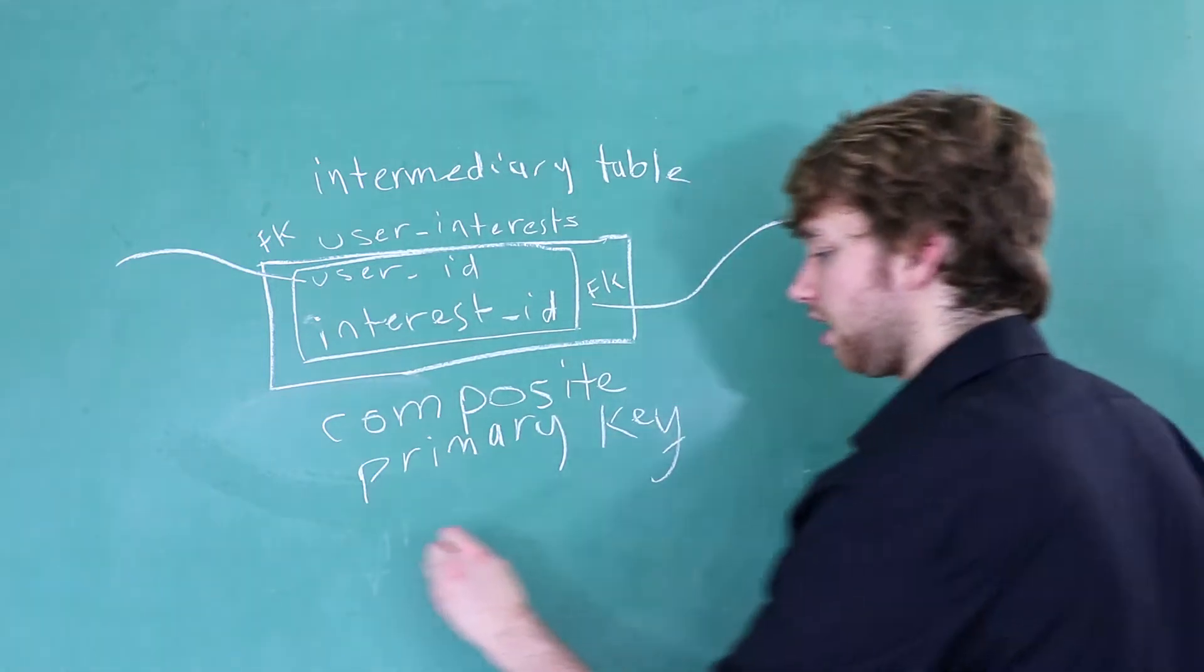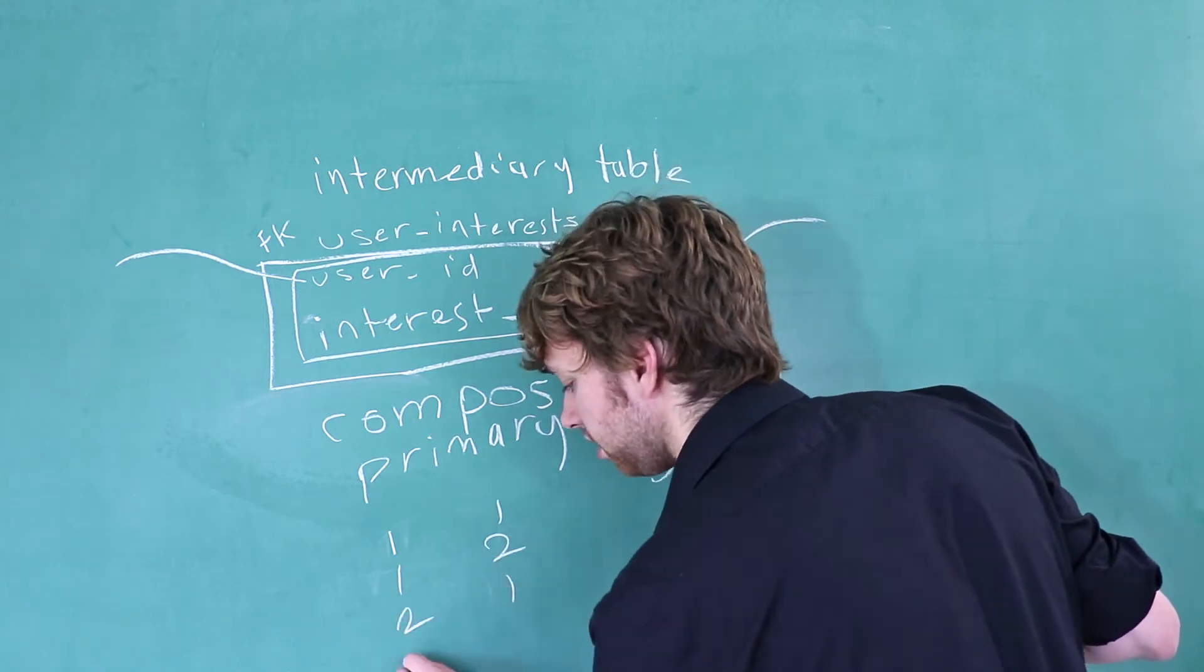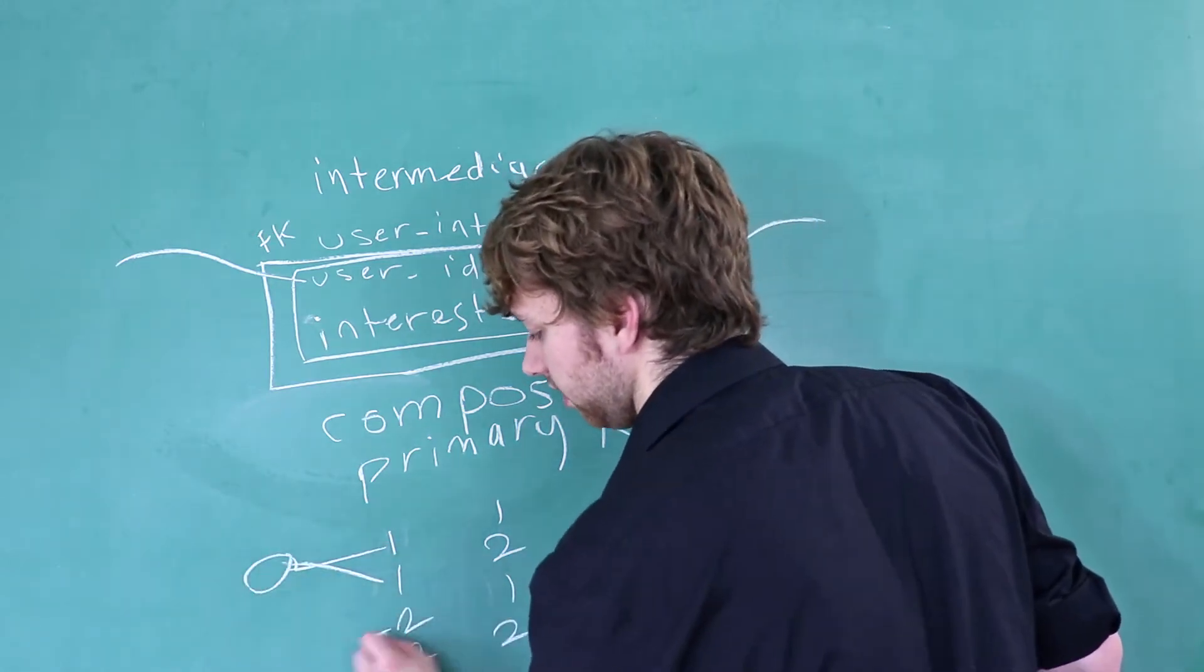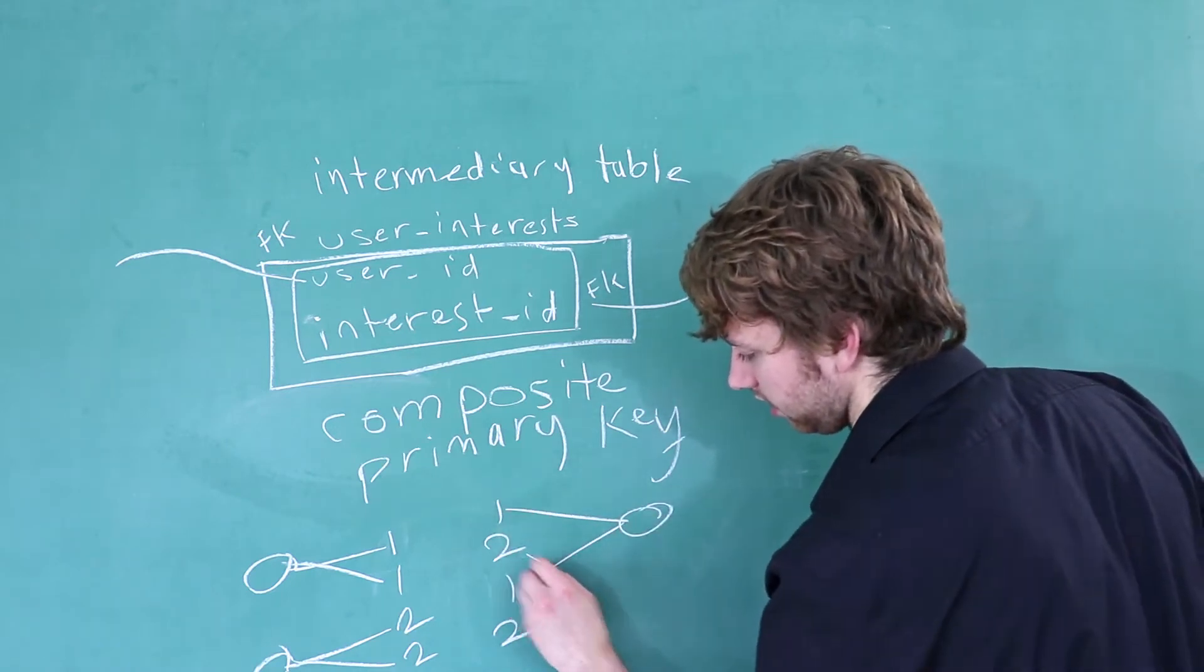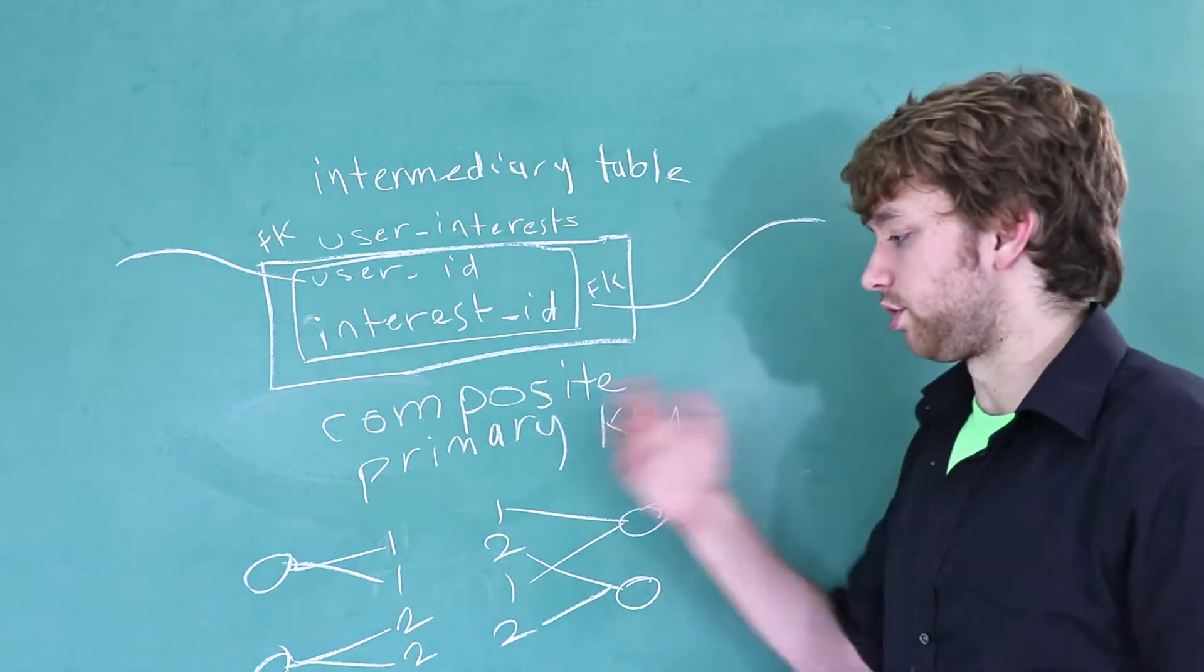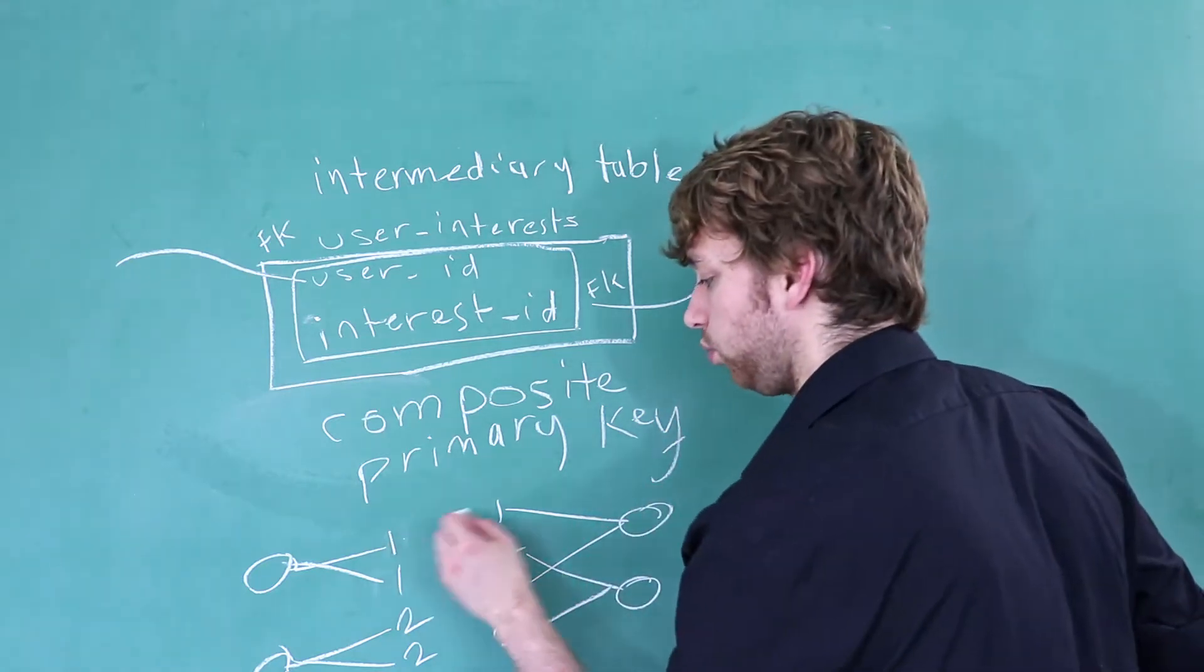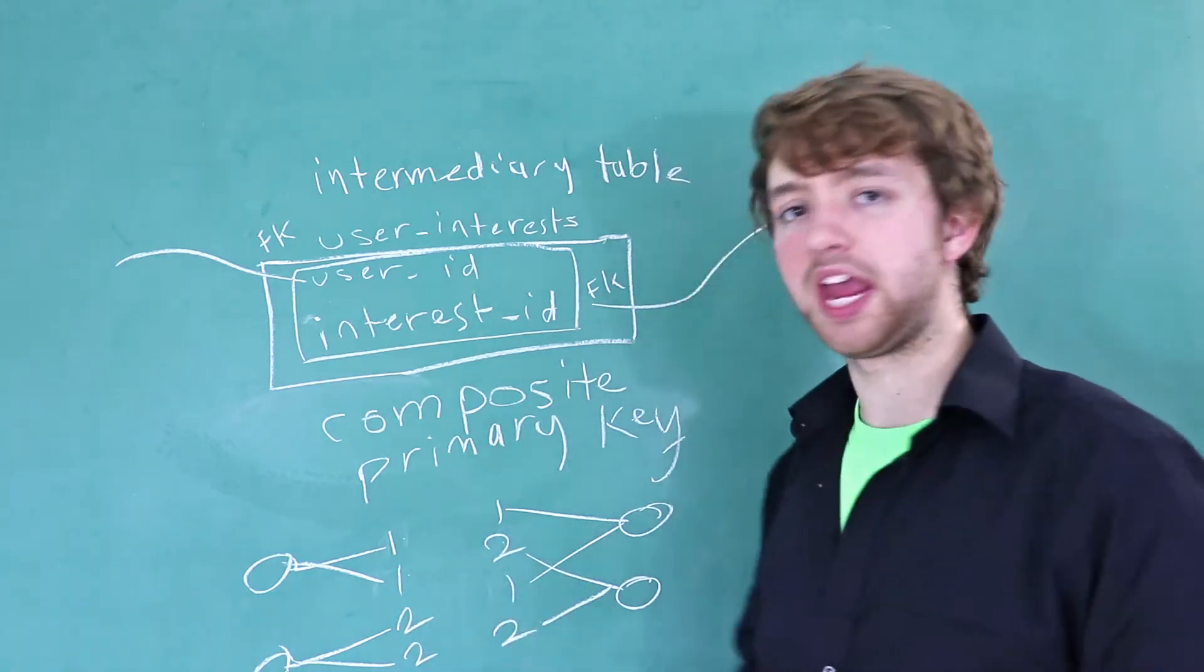The trick though is that you have to keep the combination of a user ID and the interest ID unique. So if we write out this data we might have 1 and 1, 1, 2, 2, 1, 2, 2, for example. So these both reference one entity, these both reference one entity, these both reference one entity, and these both reference one entity. So there's repeating data in both columns. But the thing is, the combination is never repeated. Once we have 1, 1, you can't repeat that. Once you have 1, 2, you can't repeat that.